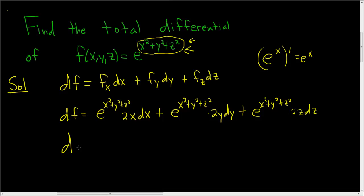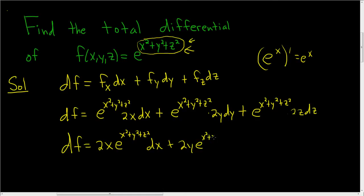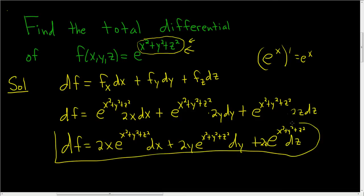We can clean this up. So df is equal to 2x·e to the x squared plus y squared plus z squared, dx, plus 2y·e to the x squared plus y squared plus z squared, dy, plus 2z·e to the x squared plus y squared plus z squared, dz. It looks a lot scarier than it actually is — it's really easy to compute. I hope this video helps.